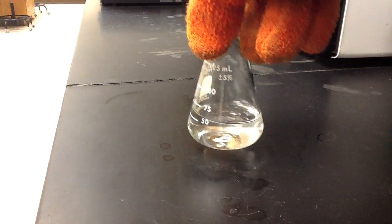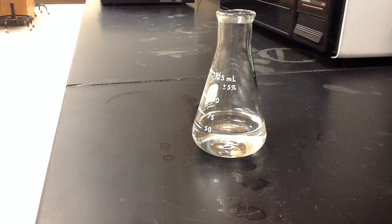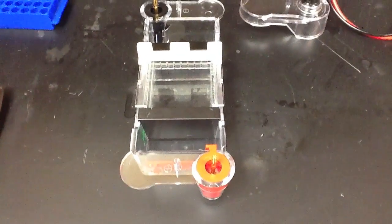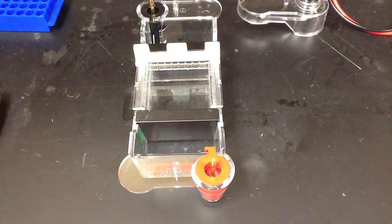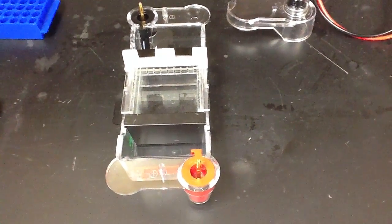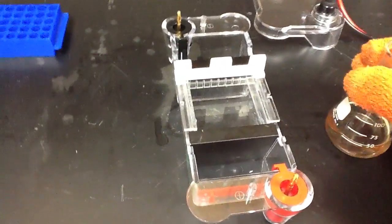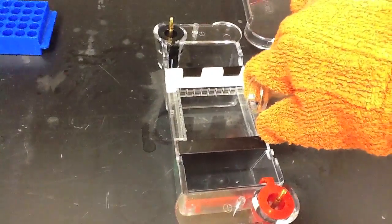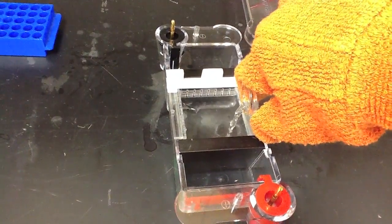Once the agarose has been mixed into the TBE buffer, we're ready to pour our gel. We start by assembling our gel apparatus with a comb, a casing, and two barricades. We then pour the hot agarose into the gel casing and allow it to sit at room temperature until it solidifies.